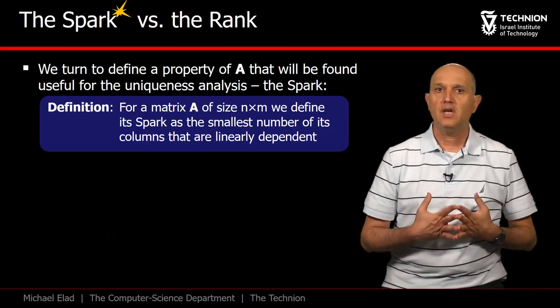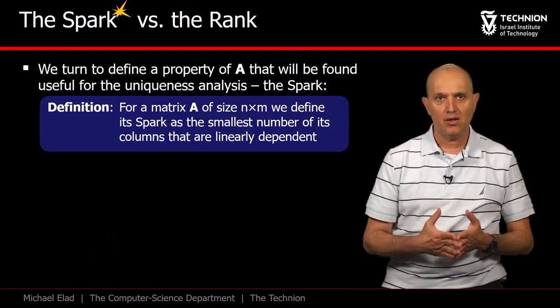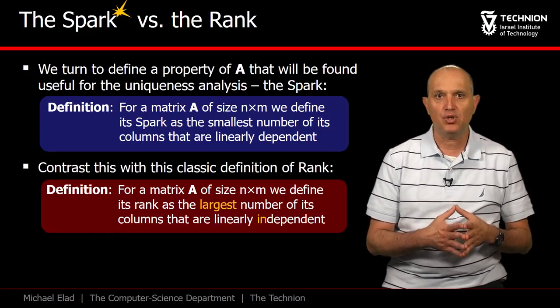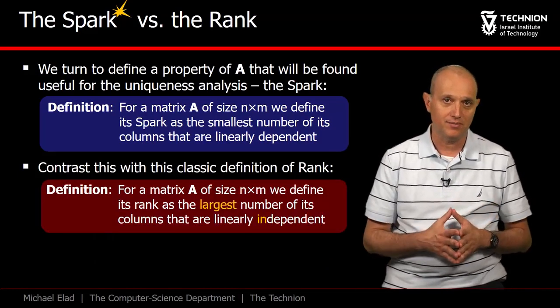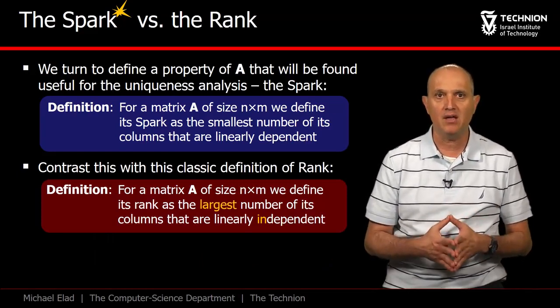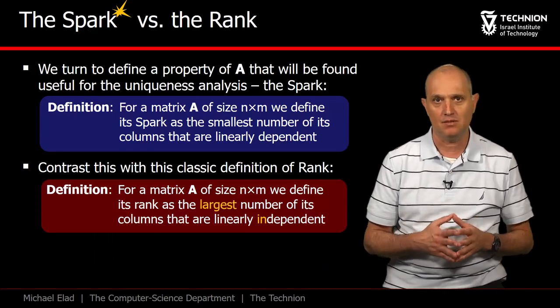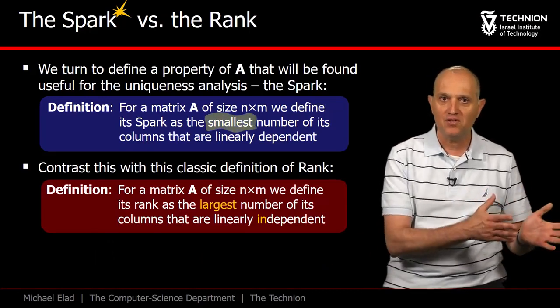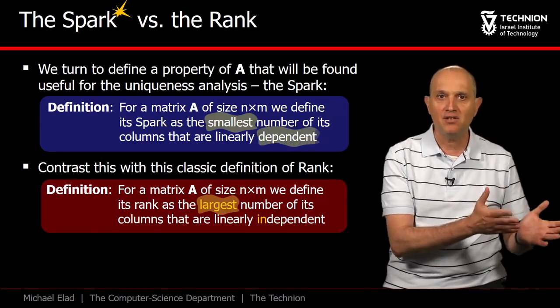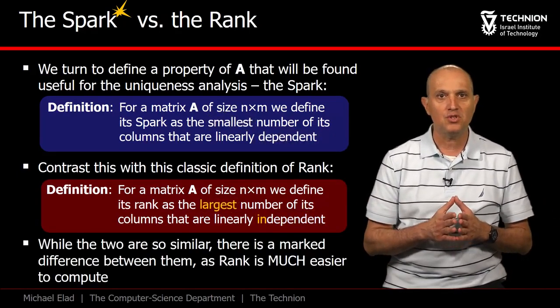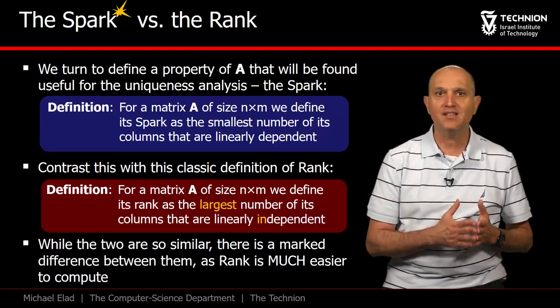Indeed, what is the relationship between the spark and the rank of a matrix? In order to answer this, let's look at the definition of the rank, and contrast it versus the spark. Rank is the maximal number of columns from A that are linearly independent. Observe how similar these two definitions are. Smallest versus largest, dependent versus independent columns. While these two definitions look so similar, they are in fact very different.